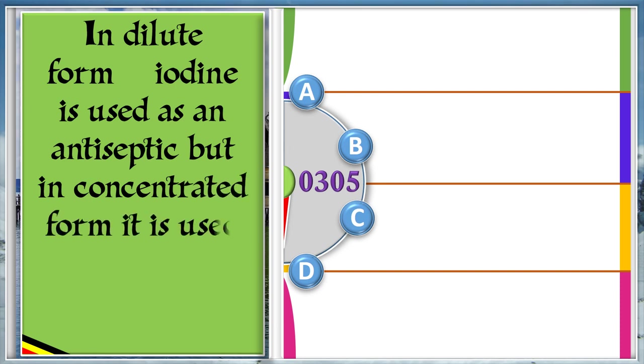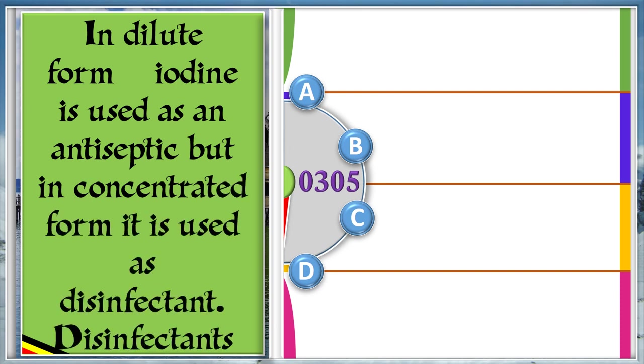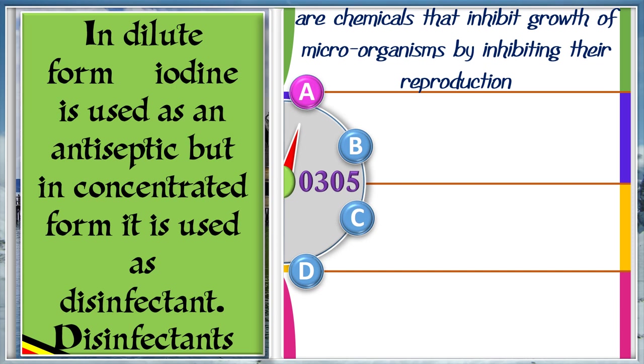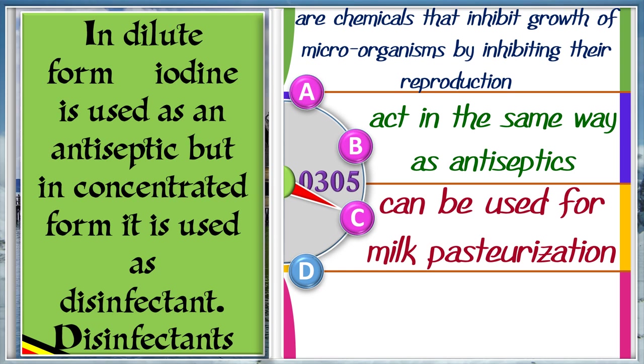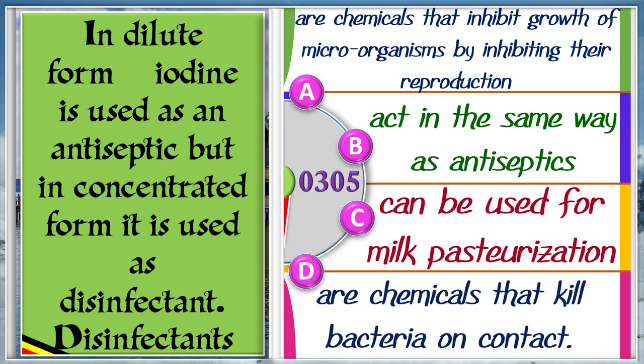In dilute form, iodine is used as an antiseptic, but in concentrated form, it is used as disinfectant. Disinfectants A: Are chemicals that inhibit growth of microorganisms by inhibiting their reproduction. B: Act in the same way as antiseptics. C: Can be used for milk pasteurization. D: Are chemicals that kill bacteria on contact. The answer is D.